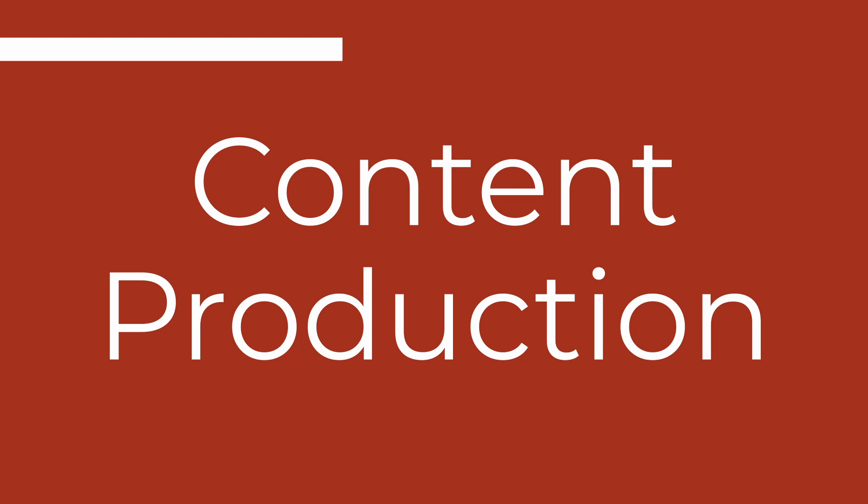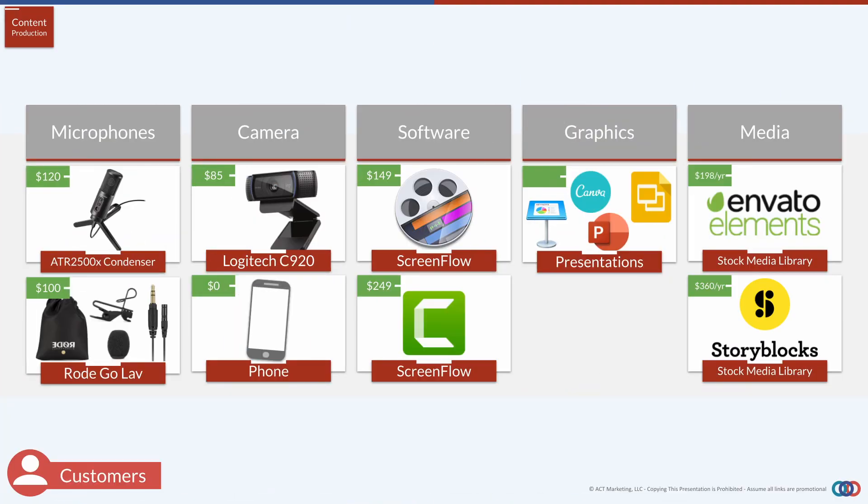One final step before you start building your site is content creation. The good news is when it comes to creating membership content, the bar is really low. When it comes to production quality, you don't need a fancy camera or mic — nobody really cares. What you're being judged on is the quality of your content and whether people are getting the value they thought they'd get when they signed up. For your microphone, you can use the Rode Lavalier Go, which is what you're listening to right now.